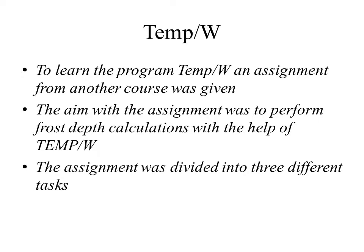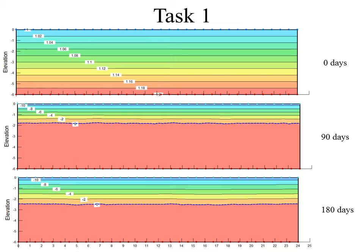The whole assignment will now be explained in more detail. The first task was to perform an analysis without the foundation for the given location, which was Kiruna. The temperature conditions at the surface boundary were first taken as the mean annual temperatures, and we ran a steady-state analysis for these initial conditions. Then we ran a transient analysis for the duration of the freezing period, which was 180 days.